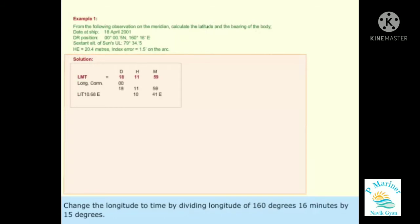Change the longitude to time by dividing the longitude 160 degrees 16 minutes by 15 degrees. We get 10 degrees 41 minutes and 4 seconds. Now subtract this from LMT meridian passage to get approximate GMT meridian.